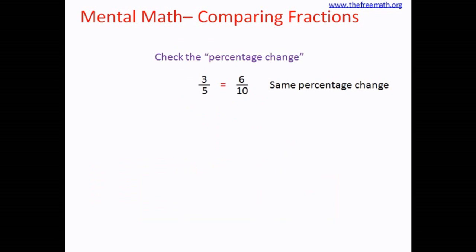Let's consider another example: 6 over 13 and 9 over 19. Both fractions are closer to 50 percent, so the previous method of thinking in terms of percentages does not help here — that's why we think of the percentage change. Looking at the numerators 6 and 9, the increase from 6 to 9 is 50 percent, since 6 plus 3 equals 9.